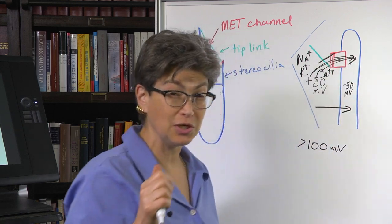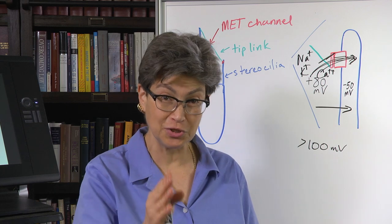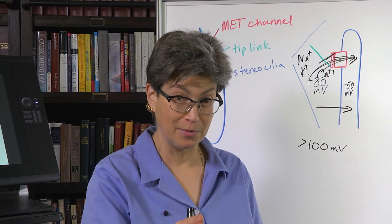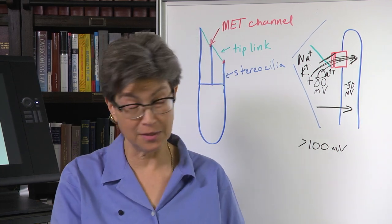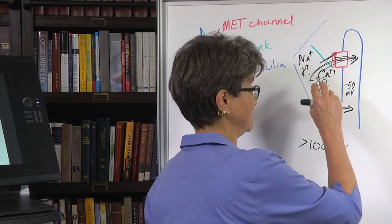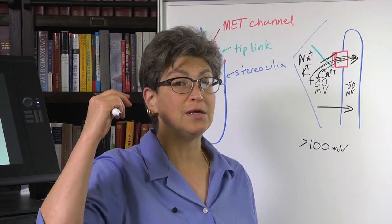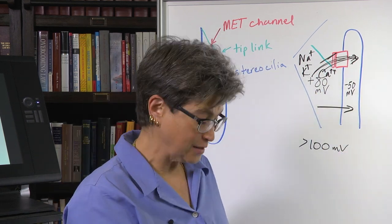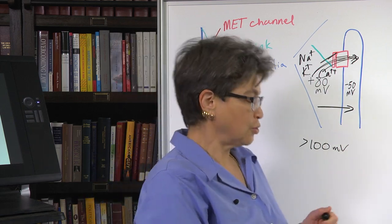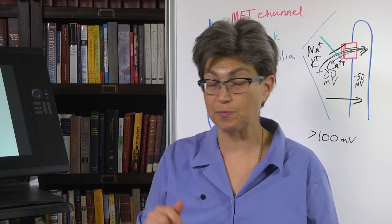This is a very quick response. Just remember how slow vision is. Vision is supported by a metabotropic receptor, rhodopsin, and this is the polar opposite of that. This is an ionotropic receptor with a huge driving force, so the response is very, very fast. Great, so now what does the outer hair cell do with that response?